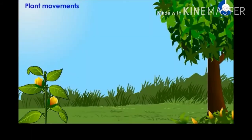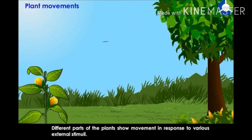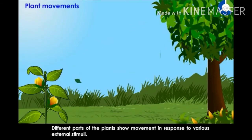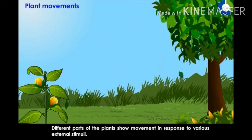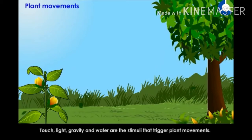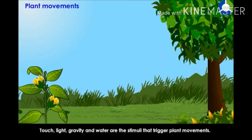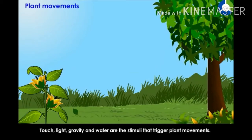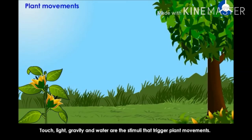Different parts of the plant show movement in response to various external stimuli. Touch, light, gravity, and water are the stimuli that trigger plant movements.